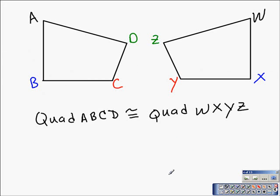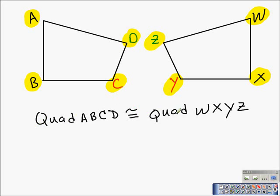Here we have two quadrilaterals. We have quadrilateral ABCD and we have quadrilateral WXYZ. The vertices are color-coded to help us identify the corresponding parts. Vertex A corresponds to vertex W in the other quadrilateral. B corresponds to X, C corresponds to Y, and D corresponds to Z. So we would state that quadrilateral ABCD is congruent to quadrilateral WXYZ — notice we lined up the corresponding vertices.